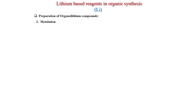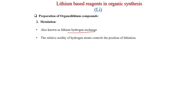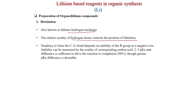Another preparation method is metallation, also known as lithium-hydrogen exchange, where the C-H bond is converted to a C-Li bond. The relative acidity of the hydrogen atom controls the position of lithiation. The tendency to form the C-Li bond depends on the stability of the R group as a carbanion, which can be measured by the acidity of the corresponding carbon acid. A 2-3 pKa unit difference is sufficient to drive the reaction to completion up to 98%, though greater pKa difference is desirable.